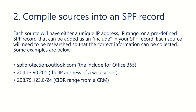Each of those sources will either be an include. So in the case of the first section here, we have spf.protection.outlook.com. That's the include that you would use for Office 365. So in your SPF record, that's something that you will definitely need since your email is hosted on Office 365.